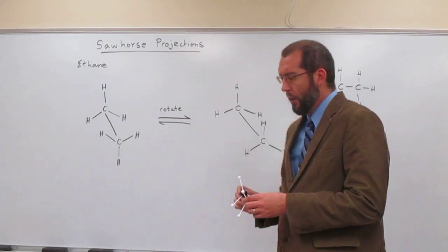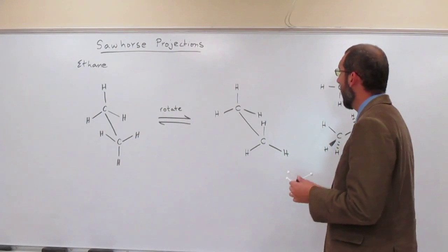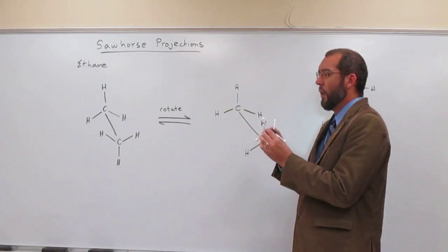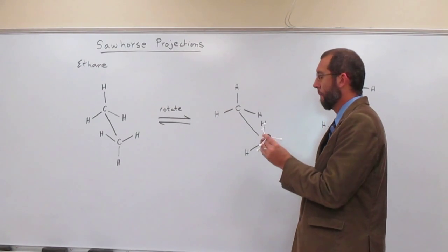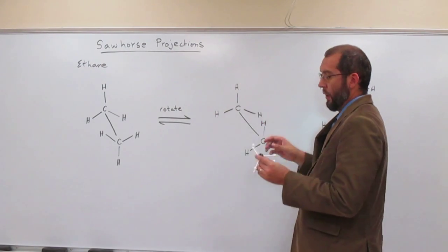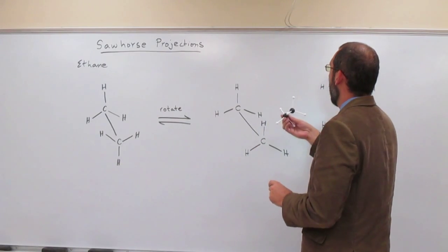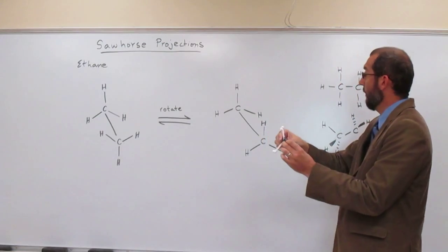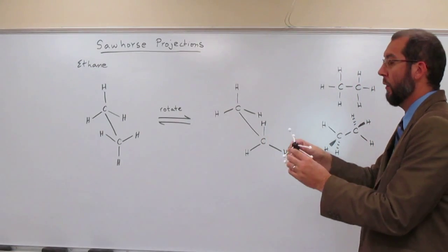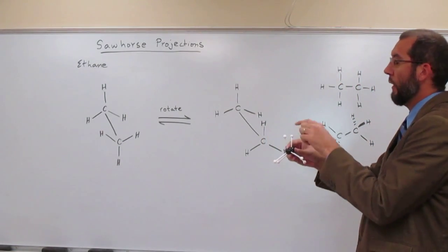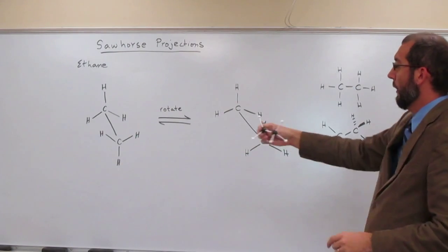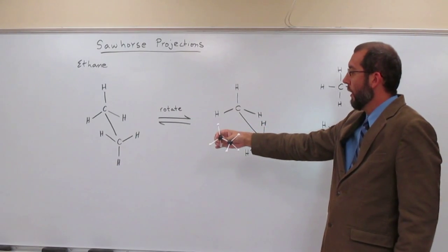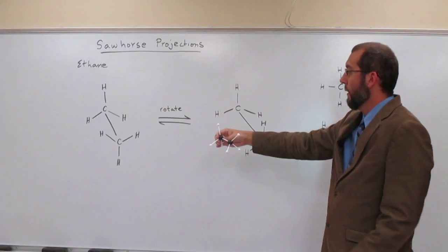And last thing I want to show you is that when the hydrogens are in front of each other, when we're looking at the model set of the ethane molecule, when the hydrogens are directly in front of each other, we call that eclipsed. So with the sawhorse projection looking like that, that's an eclipsed sawhorse projection.